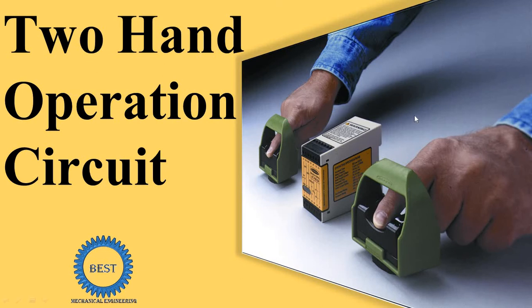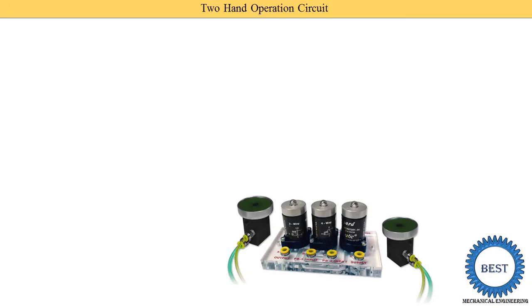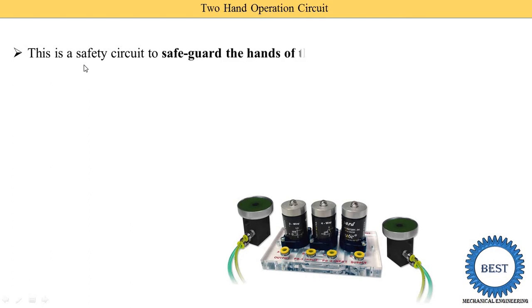Here you can see an image in which the operator is pressing two switches. At that time some operation gets an output; otherwise, if you press only one switch, you are not able to achieve any output from the system. There is also another system shown in which two switches are used. This is a safety circuit to safeguard the hands of the operators.